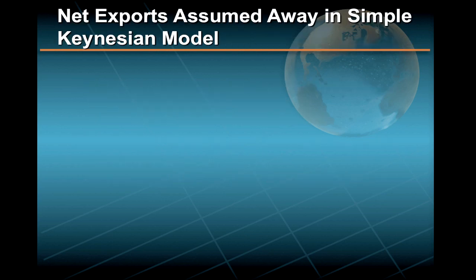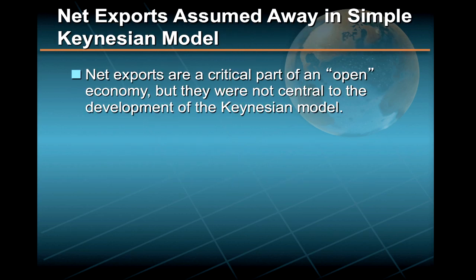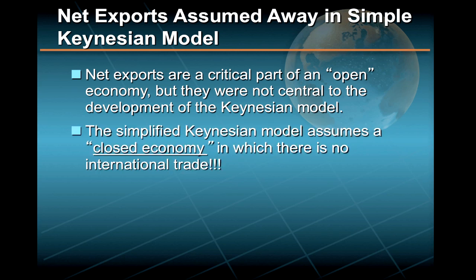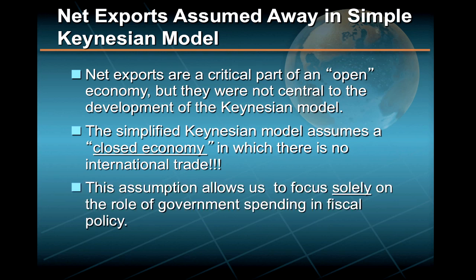While net exports are a very important part of a global or open economy, they were not central to the development of the Keynesian multiplier model. So for the remainder of this lesson, we shall make a simplifying assumption: we'll assume a closed economy in which there is no international trade, and drop net exports from the model. This allows us to focus solely on the role of government spending in fiscal policy. We'll deal with international trade and trade deficits in a subsequent lesson.